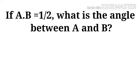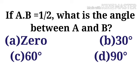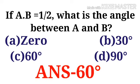If A cross B equals 1/2 AB, what is the angle between A and B? The options are: Option A, 0; Option B, 30 degrees; Option C, 60 degrees; Option D, 90 degrees. The correct option is Option C, 60 degrees.